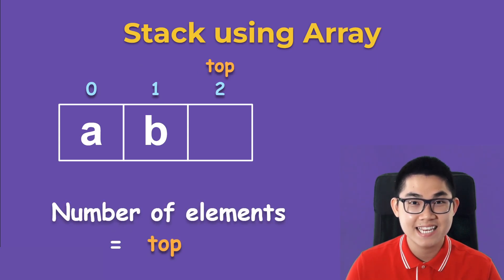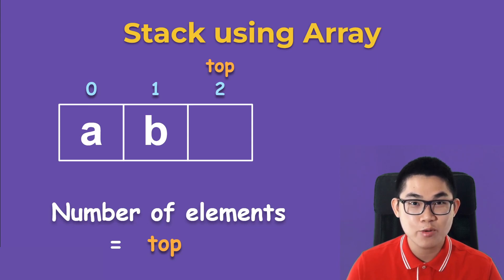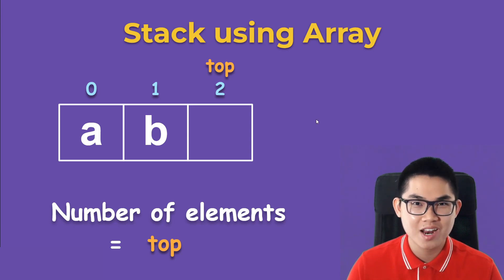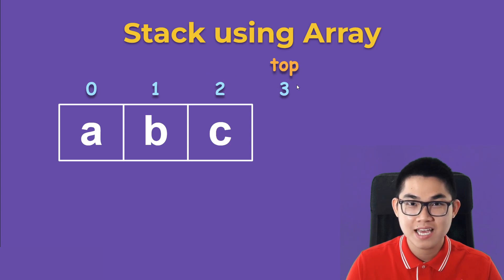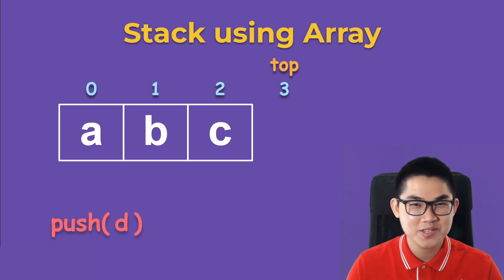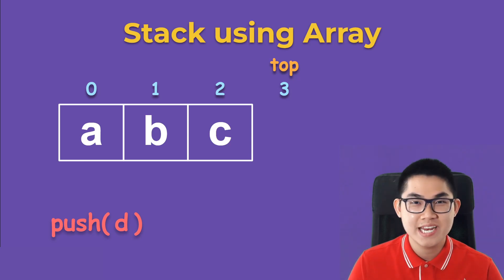The number of elements inside the stack is equal to top — so when top is equal to two we know there are two elements, A and B. Let's push C: C goes in and we increment top. Then we push D — now we need to add more space to the array.